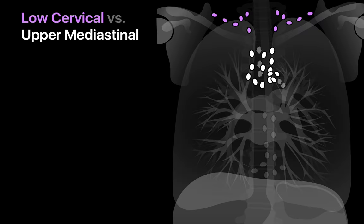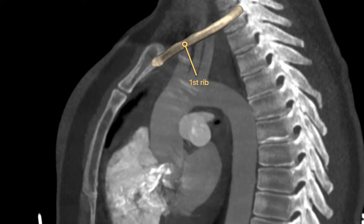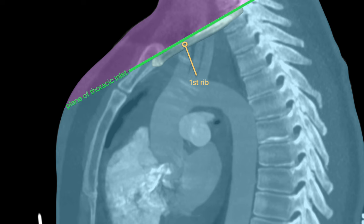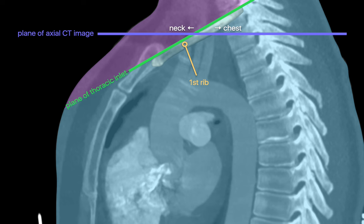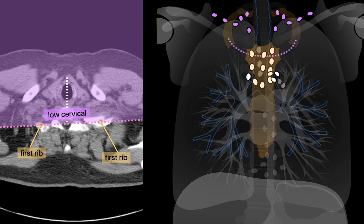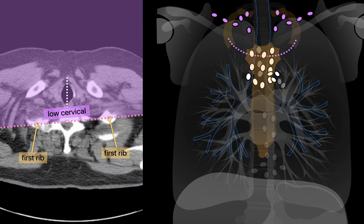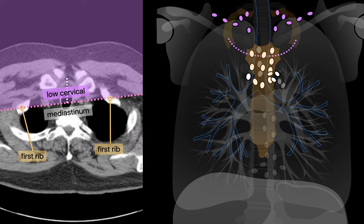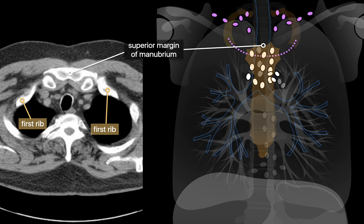When is a lymph node lower cervical versus mediastinal? Low cervical lymph nodes are located in the lower neck, not the chest. The boundary between the neck and the chest is the thoracic inlet — an oblique plane defined by the superior margins of the first ribs. On an axial CT image, lymph nodes anterior to the portions of the right and left first ribs are in the neck. So if you draw a line through the first ribs on a CT image, anything anterior to that line is in the low cervical station, which ends at the superior margin of the manubrium.